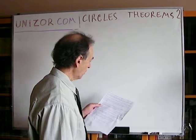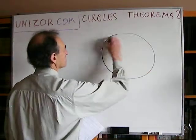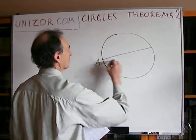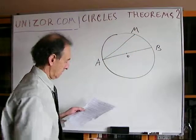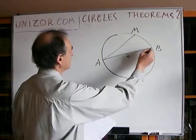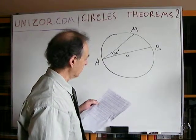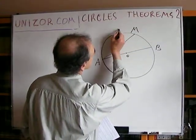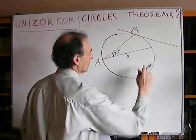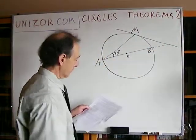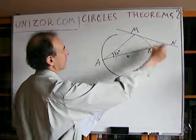In a circle with center O, given a diameter AB and chord AM sharing an endpoint with the diameter. Angle BAM is 30 degrees — that's given. At endpoint M of chord AM on the circle, draw a tangent which intersects the diameter at point N. Prove that triangle AMN is isosceles.